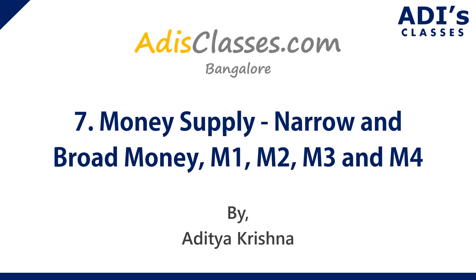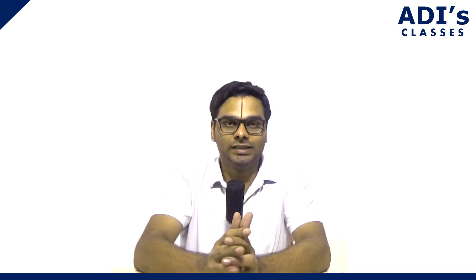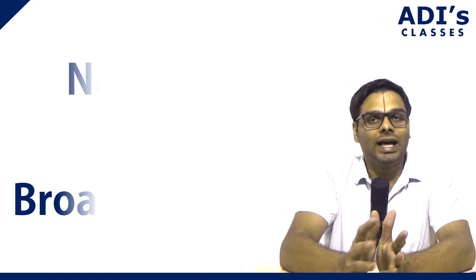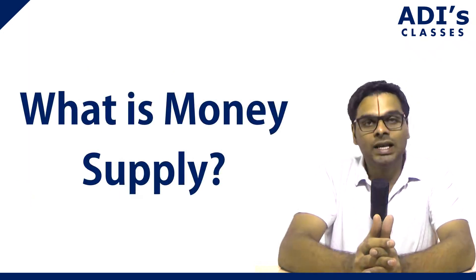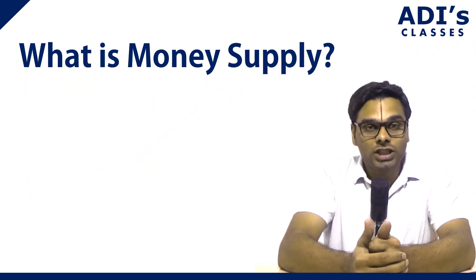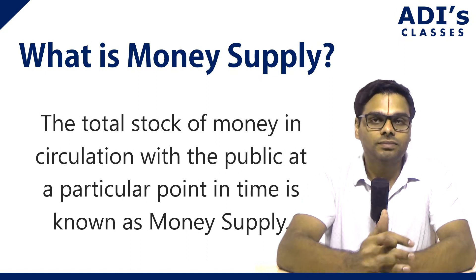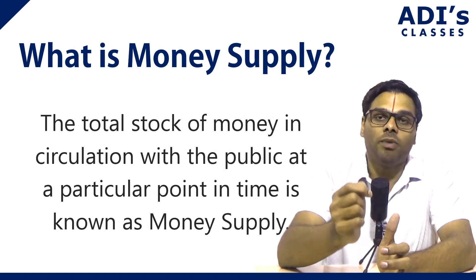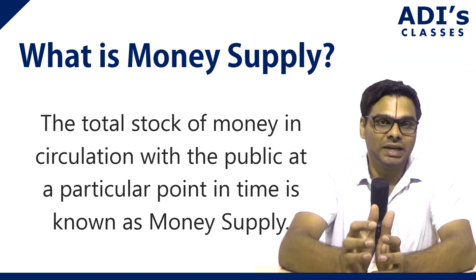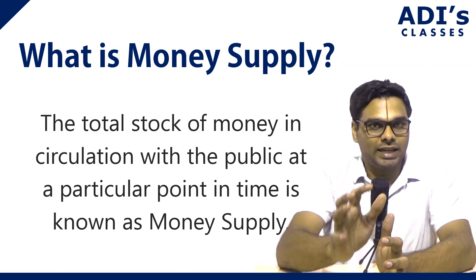In this video, we are going to look at money supply — narrow money, broad money, M1, M2, M3, M4. We'll introduce these two terms, narrow money and broad money. But before that, we have to define what money supply is. Money supply is defined as the total stock of money in circulation with the public at a particular point in time. This is known as money supply.